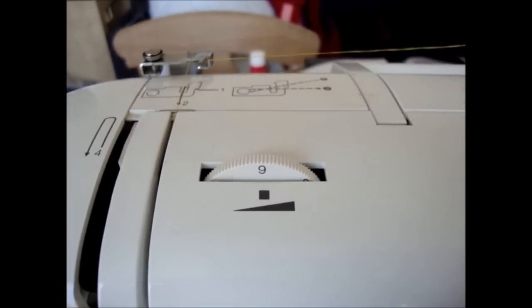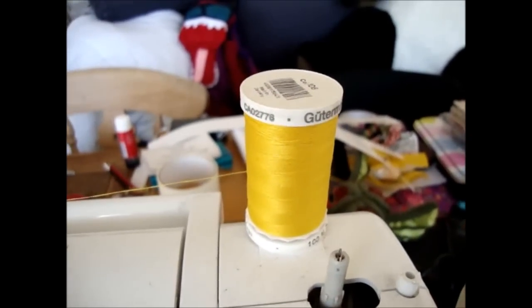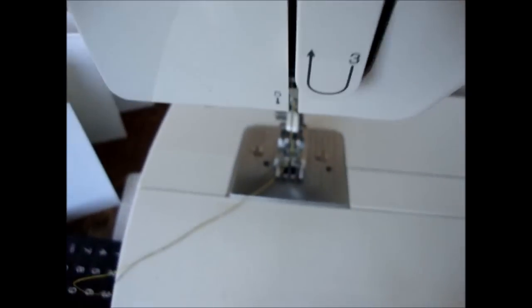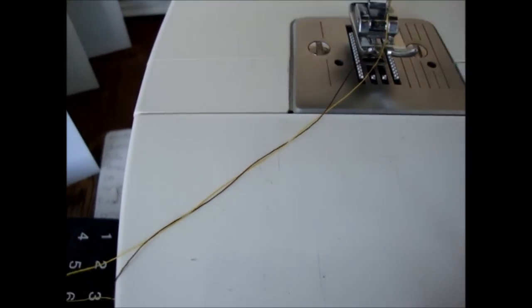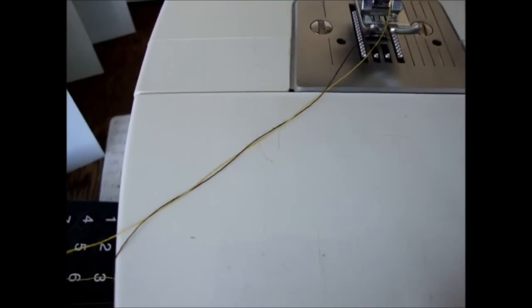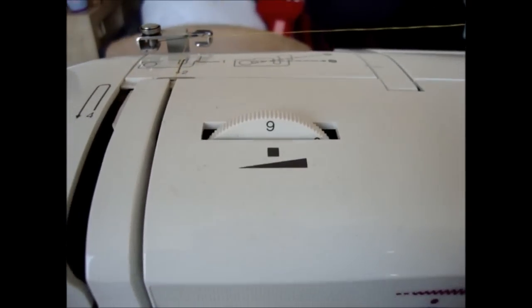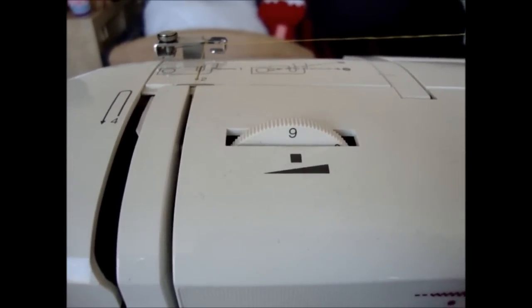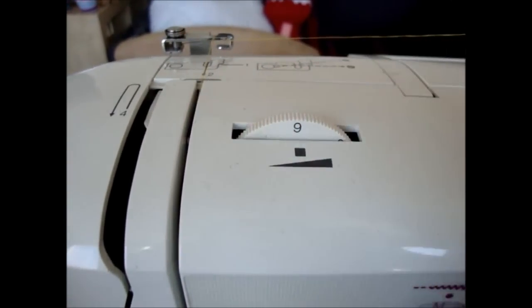I should add as well that when you're checking your tensions it's important to use different coloured threads for the top thread and the bobbin. This way it lets you determine whether it's the top thread tension or the bottom thread tension that's giving you problems. However you rarely need to adjust the bottom thread tension. So in general it's usually the top thread tension that you adjust using this dial here.